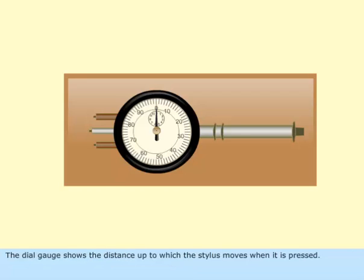The dial gauge shows the distance up to which the stylus moves when it is pressed.